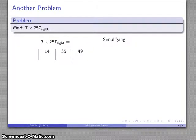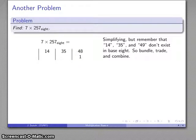We can do that by bundling and trading. This 49 has a whole bunch of 8s in it. I can take 48, that's a group of 8s, and 1 left over. I can bundle and trade for 6 more in the next place. I'll combine those. This 41 has a bunch of 8s in it. There's my bundle, which I trade and combine. This 19 has a couple of 8s in it. There's my bundle and trade, and my number 2311 base 8 as my final answer.